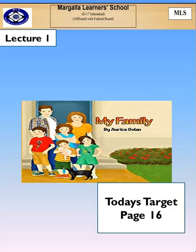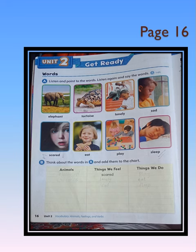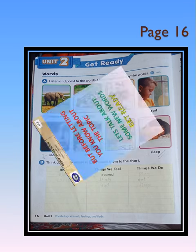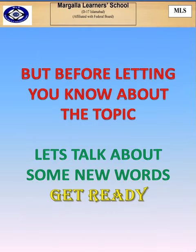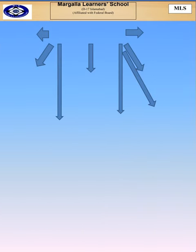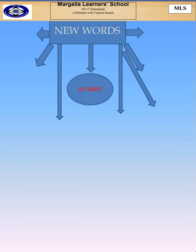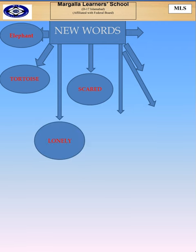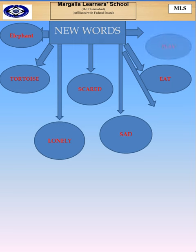Welcome to MLS online virtual classroom. Today we are going to start our new chapter — open up your books, page 16. Before starting the new chapter, let us talk about some new words: scared, elephant, tortoise, lonely, sad, eat, play, sleep. Most of these words are very easy for you. Let us learn the meanings of these words.